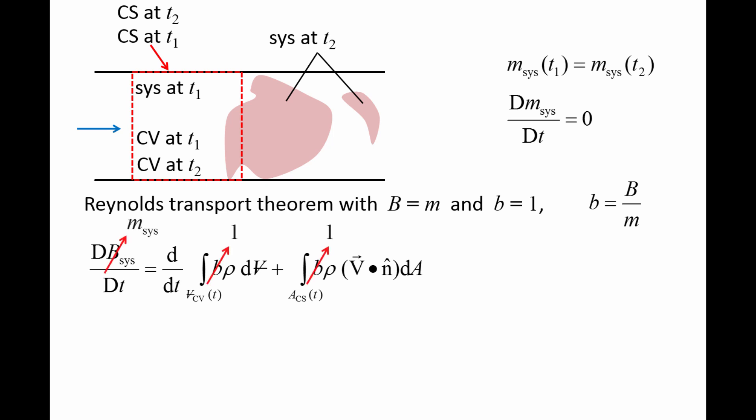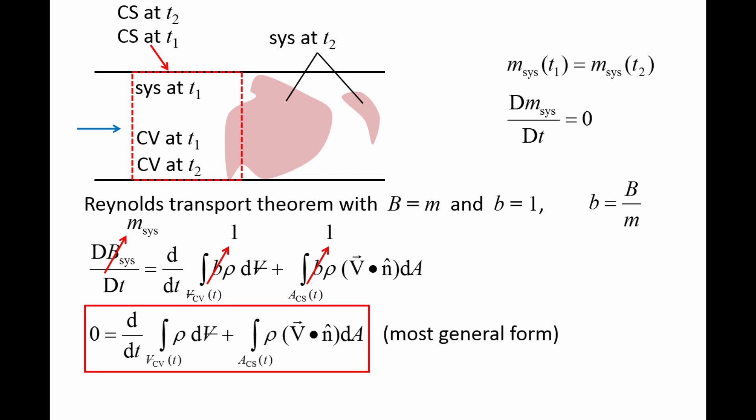Now plug in the values for capital B and lowercase b. The left side of the equation is the time rate of change of mass in the system point of view, which we have already determined to be zero, and we arrive at the conservation of mass equation for a control volume in its most general form. Zero equals the time derivative of rho dV integrated over the entire control volume, plus rho times the velocity vector dot n-hat times dA integrated over the entire control surface. This equation is valid for a control volume that is fixed and rigid, moving at constant velocity, or deforming.